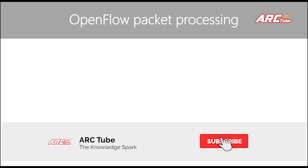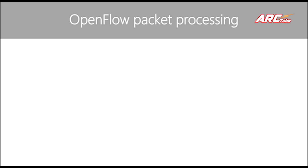OpenFlow is not the only southbound protocol that an SDN controller supports — there are multiple protocols — but we're using OpenFlow as an example to see how packets are processed in an SDN environment. Basically there are three ways packets can be processed: the first is reactive, the second is proactive, and the third, not very well known, is called hybrid.